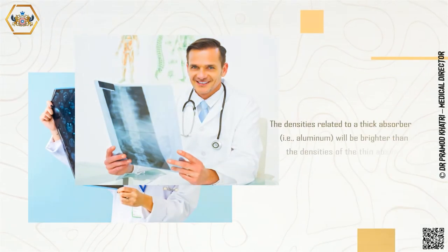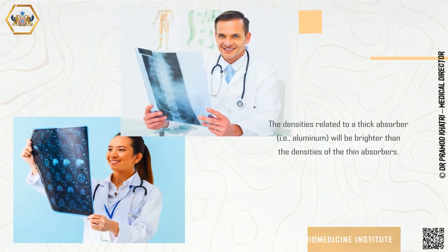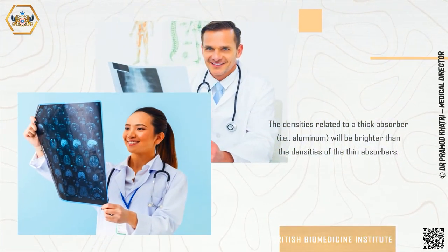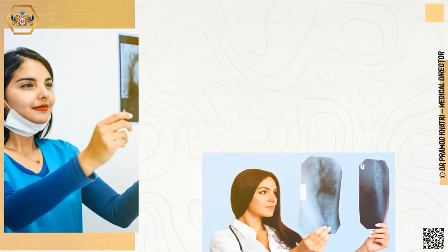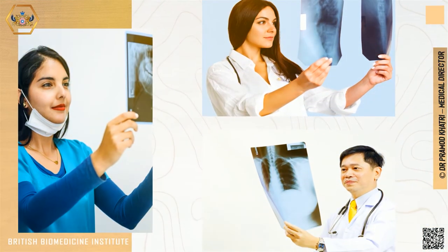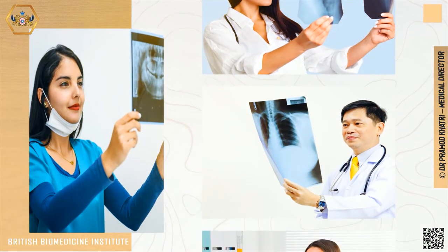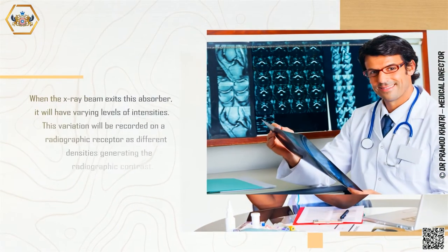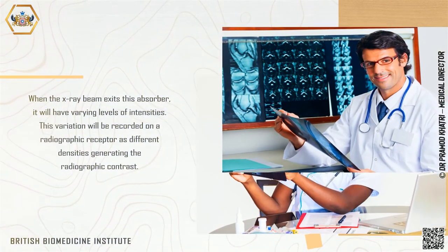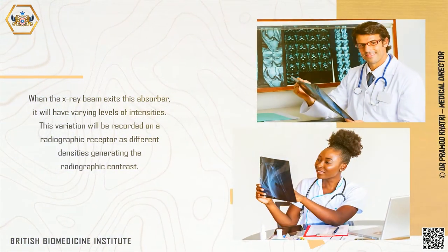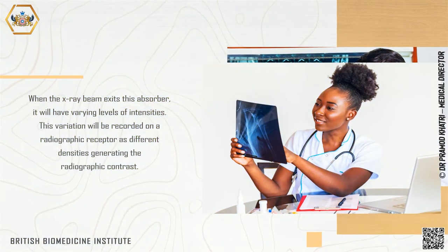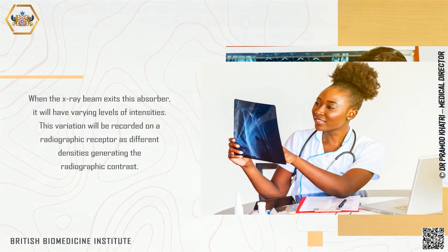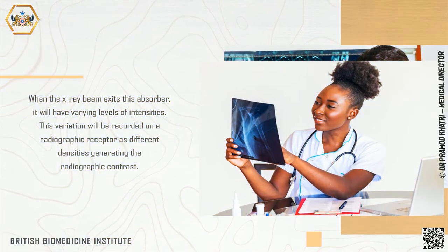The densities related to a thick absorber — that is, aluminum — will be brighter than the densities of the thin absorbers. When the X-ray beam exits this absorber, it will have varying levels of intensities. This variation will be recorded on a radiographic receptor as different densities, generating the radiographic contrast.